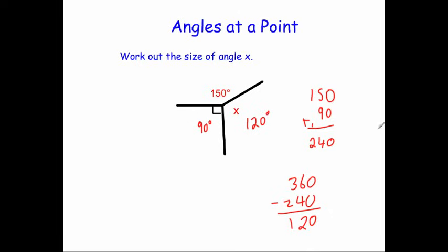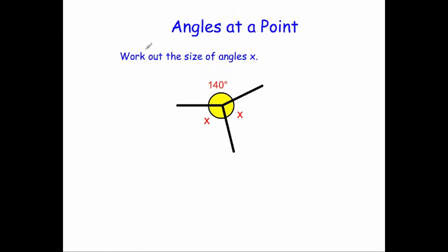And one last example. This time it says: work out the size of the angles X. We've got two angles marked X and we've got 140 degrees. We still know the angles add up to 360, but we've got two missing angles. Because they're both labelled X, that means they're both the same size. So we're going to take the 140 away from the 360 — that'll tell us what's left for the other two angles — and because they're both the same, if we halve it, we'll find out the size of one of them.